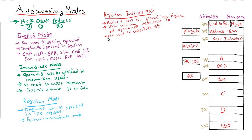In register mode we store the operand in the register itself, while in register indirect mode we store the address of the operand in the register. The advantage of register indirect mode is a larger addressable space: if the register size is 16 bits, then we can access a memory of 2 raised to 16, which is 64K. In contrast, in register mode we can access only as many locations as there are registers — perhaps 16 or 32 registers. That is how register indirect mode works.